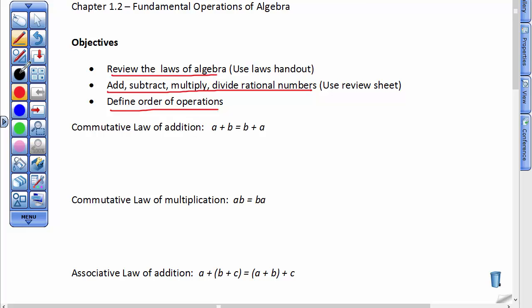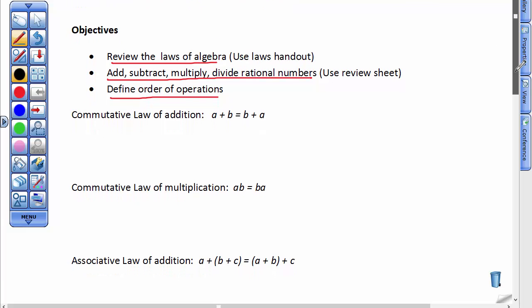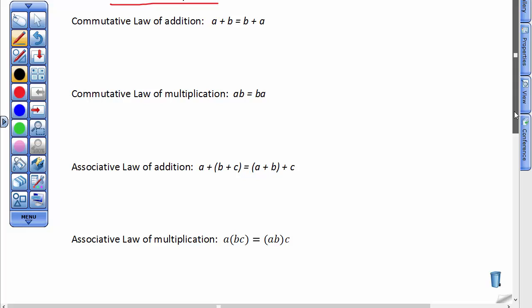I'm going to go through the laws fairly quickly. In an applied course like ours, I use these words all the time, but I seldom would ask you to repeat these laws. What I really want you to understand is that the commutative laws are good for addition and multiplication, not for subtraction and division. They say that the numbers in these two operations can commute or move backwards and forwards and you still get the same answer.